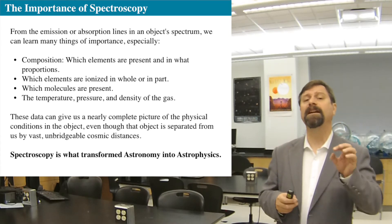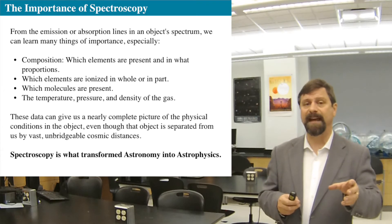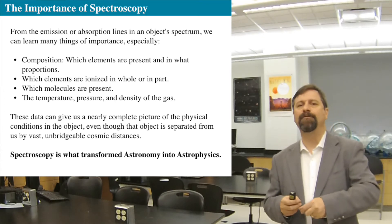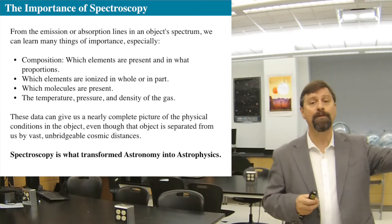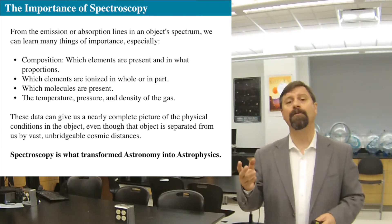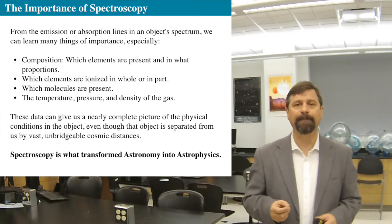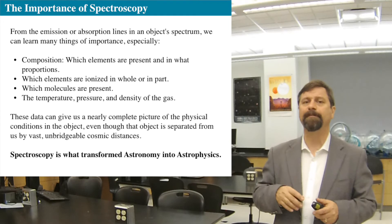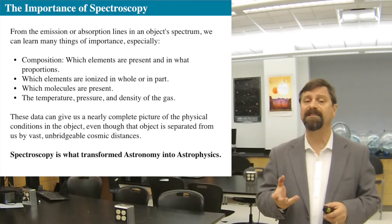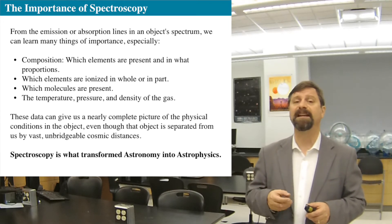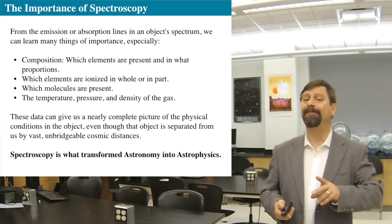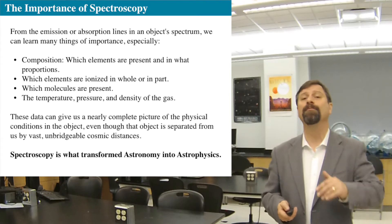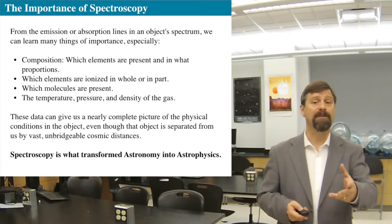If the electron gets blown out of the atom, the electric field changes a little bit, which changes the spectrum just slightly. Not only do you have to make fingerprint catalogs of emission spectra, but you also have to get the emission spectra of ionized gases, which really becomes quite a pain.